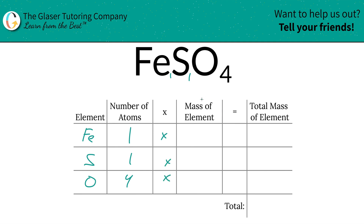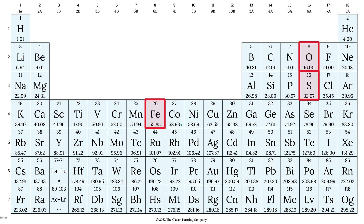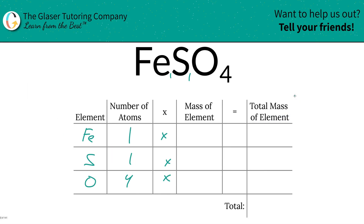We're going to take those numbers of atoms and multiply by the mass of each element — these masses are found on the periodic table. Iron is 55.85, oxygen is 16, and sulfur is about 32.07.